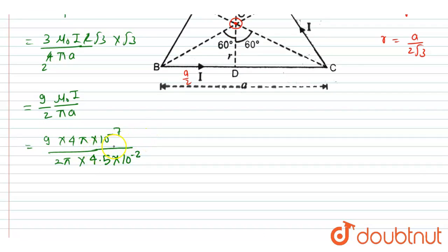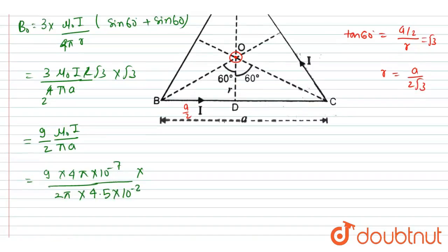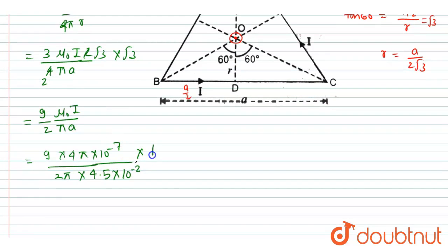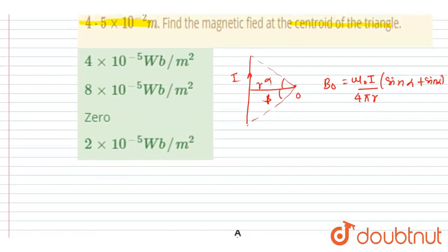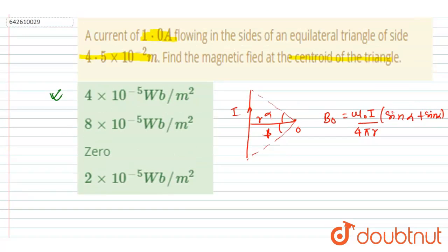And into I - so if you see, I is 1 ampere, so I will multiply it with 1. So this will be cancelled out by 2, and this will also cancel out by 2, and you will get 4 × 10^-5 as the magnetic field. And you can also match the option, so the option will be 4 × 10^-5 weber per meter squared. A is the correct option. Thank you.